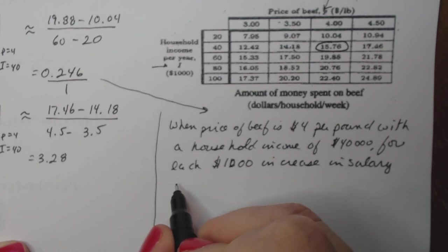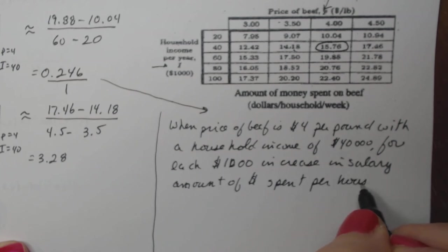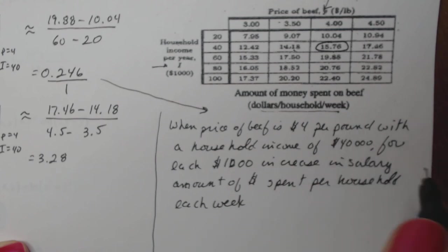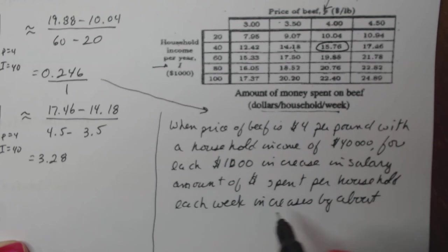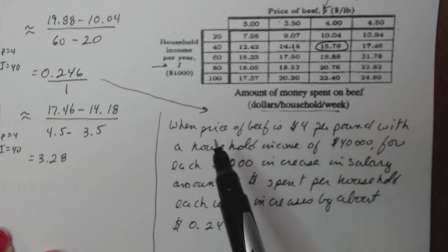So you would say something like, for each $1,000 increase in salary, where am I getting the $1,000? Well, that comes from the one down here. This is in terms of thousands of dollars, so I'm changing this about $1,000. The amount of dollars spent per household each week, the amount of dollars increases by about, technically 25 cents, but I'm going to write it in terms of dollars, 0.246 dollars.